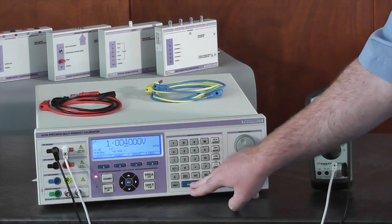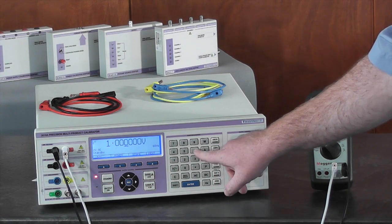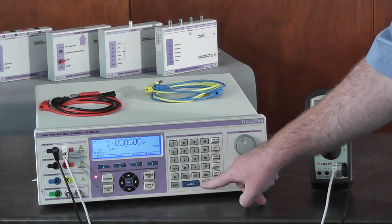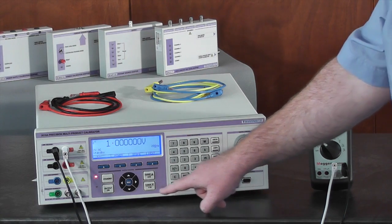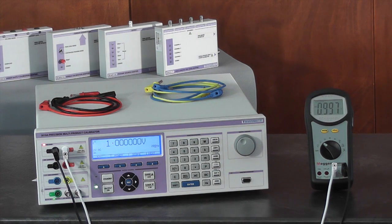We will reset the output to 1 volt and then choose a frequency of 200 hertz by entering 200 followed by the hertz key. We will now press output on and we can see an AC voltage is being measured by the multimeter.